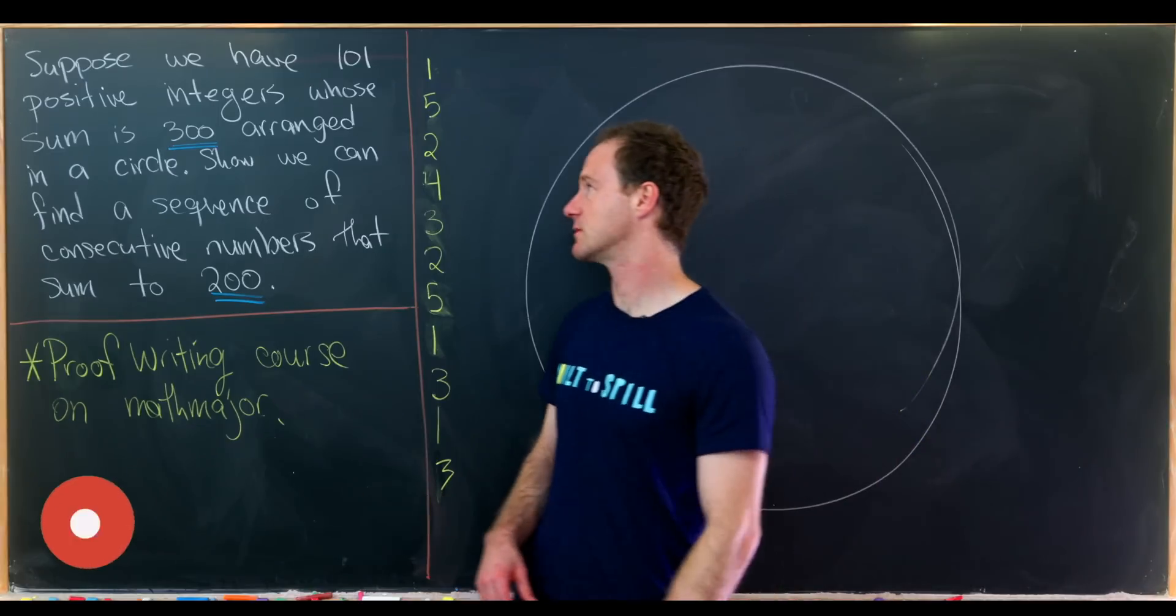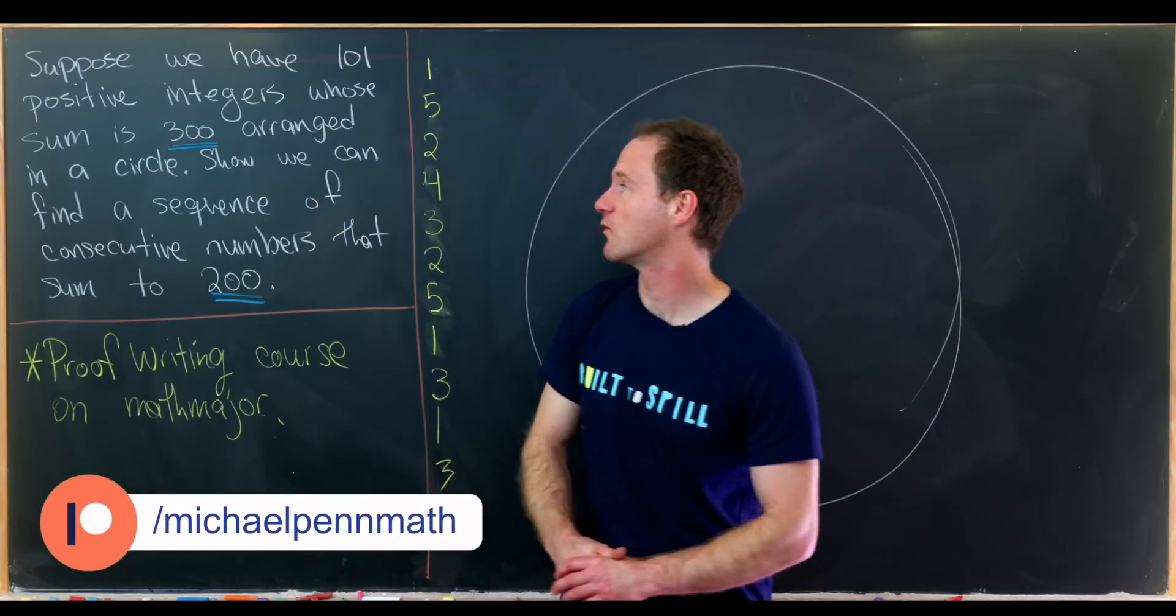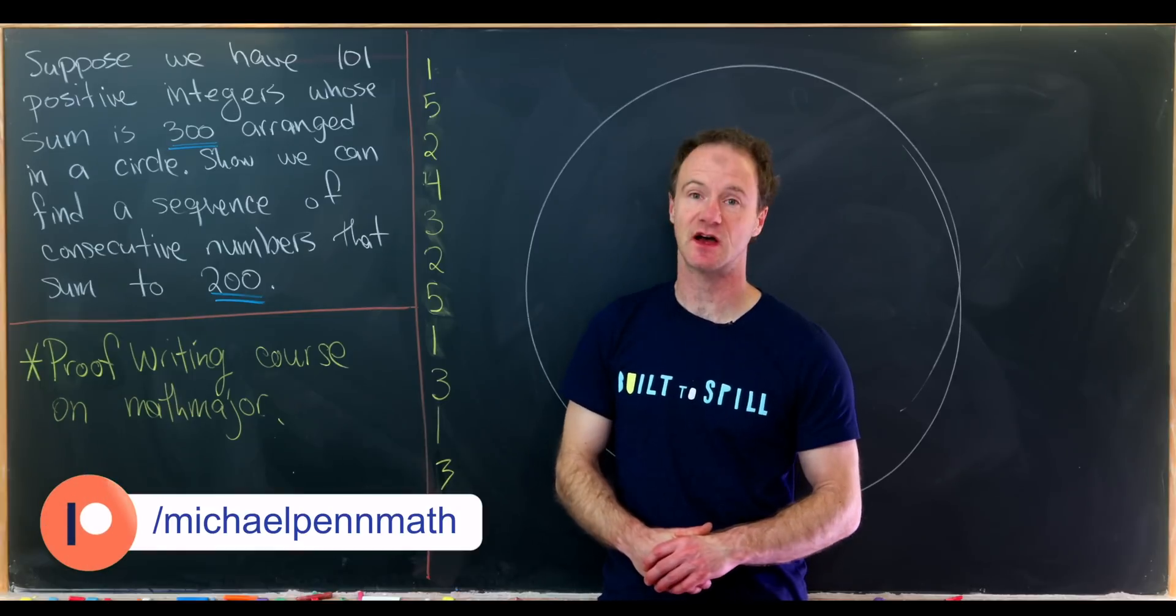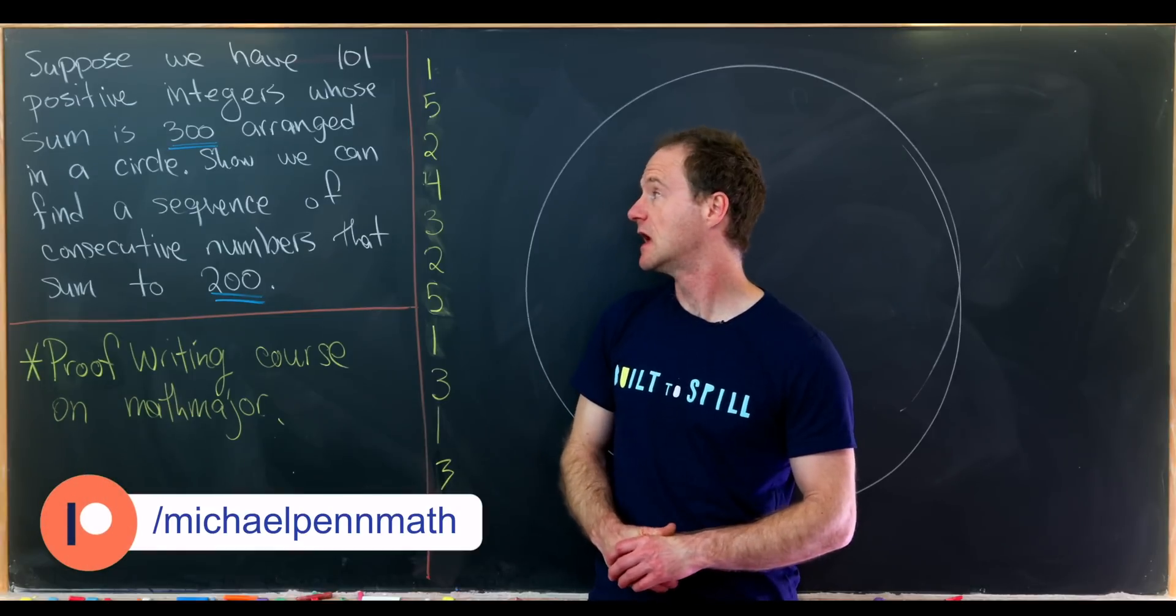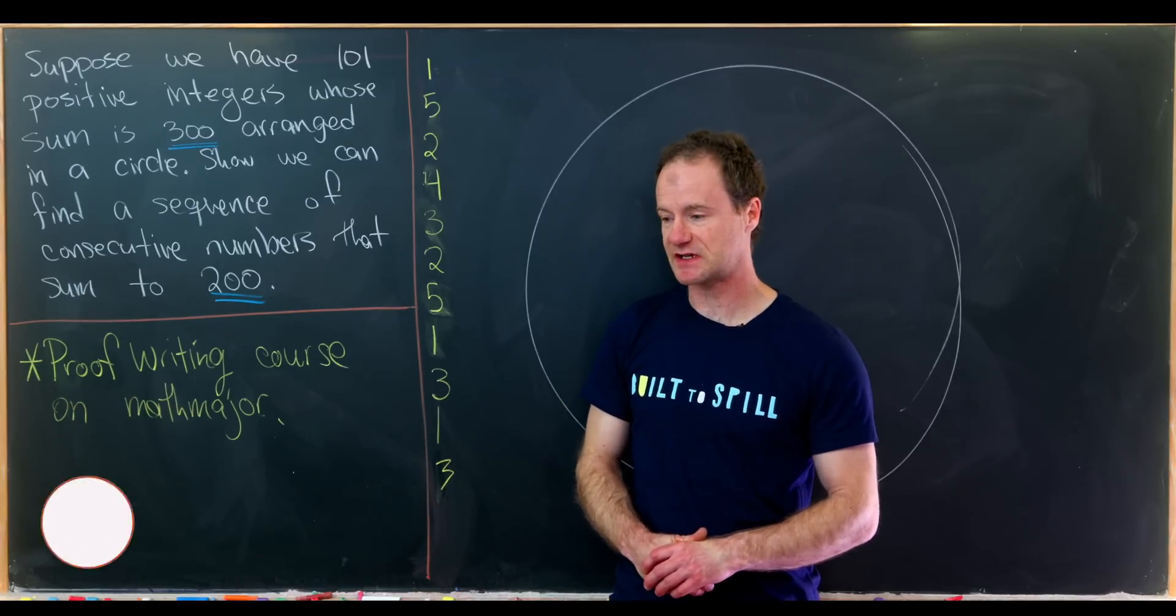So let's look at the problem. Let's suppose we have 101 positive integers whose sum is 300, and then we arrange these positive integers in a